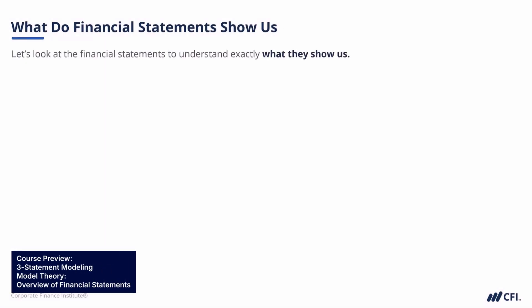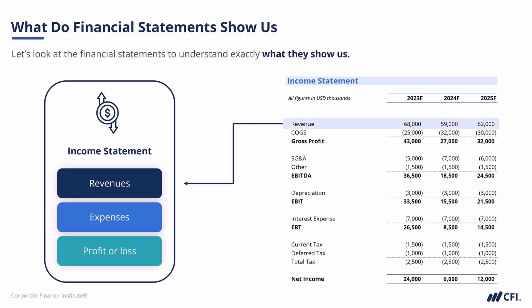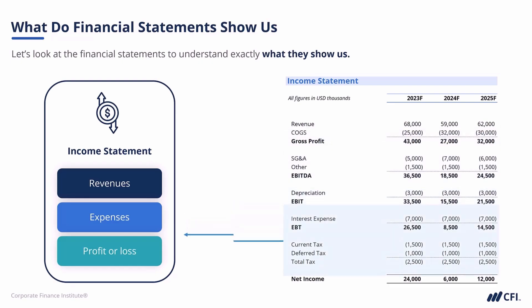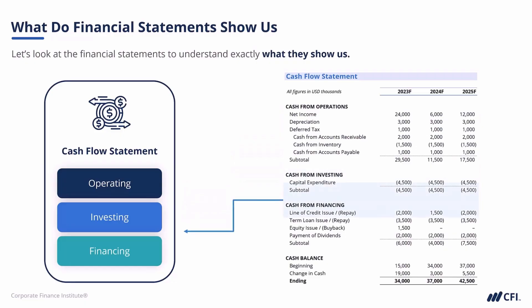Let's take a close look at the financial statements to understand exactly what they show us. We can start with an income statement. The top line for an income statement is revenue, but it also shows us costs, depreciation, interest expense, taxes, and finally the bottom line, which is net income. If we brought in a cash flow statement, we could talk about the three main sections: cash from operations, cash from investing, and cash from financing.